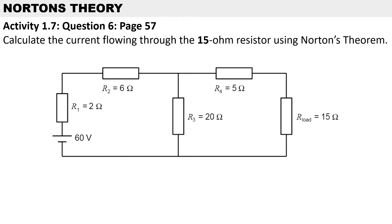This calculation comes from our textbook — it is question 6 on activity 1.7 — and we are using Norton's theorem. We need to calculate the current flowing through the 15-ohm resistor using Norton's theorem.